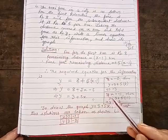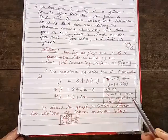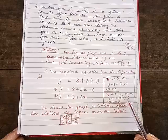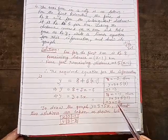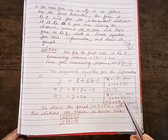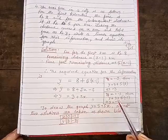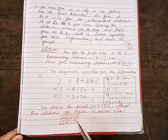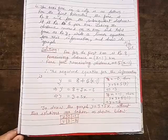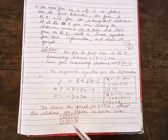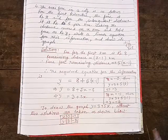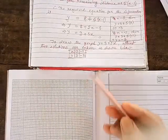For the second solution, let x = −1. Then y = 3 + 5(−1) = 3 − 5 = −2. So when x = −1, y = −2. The two points are (0, 3) and (−1, −2).